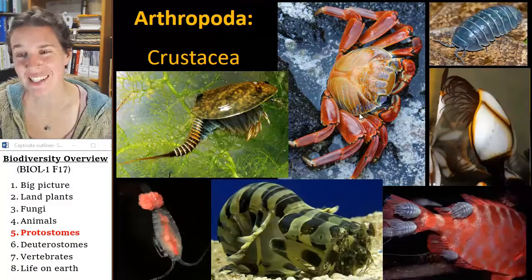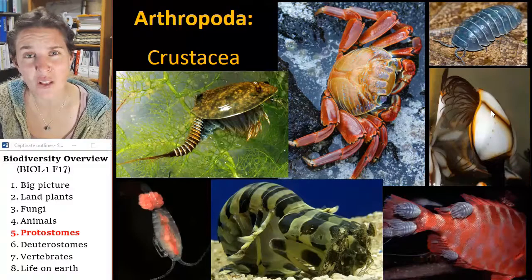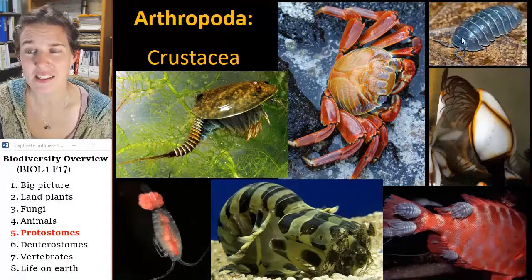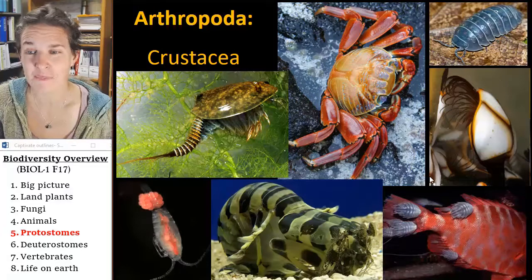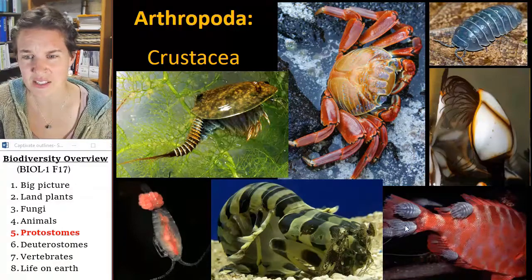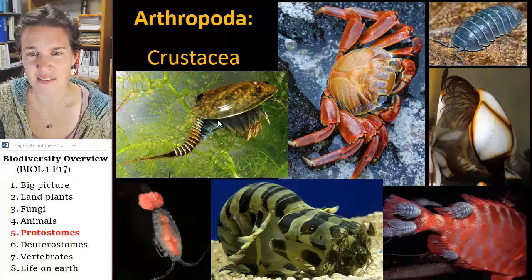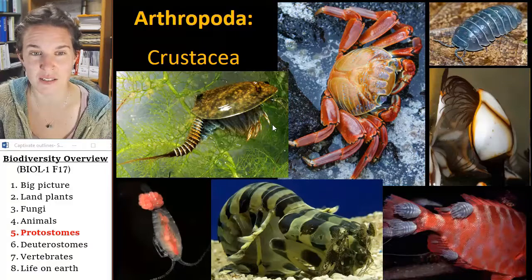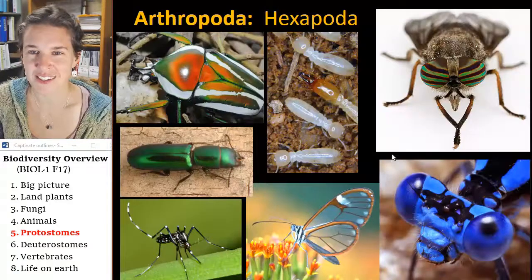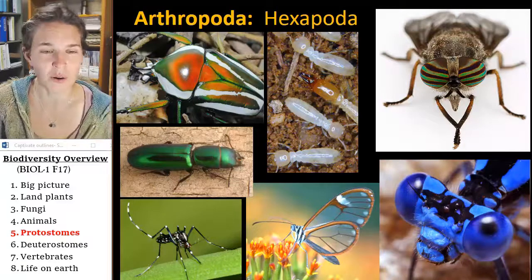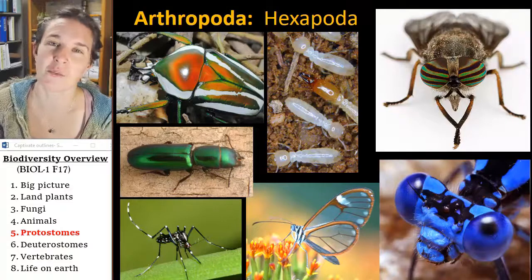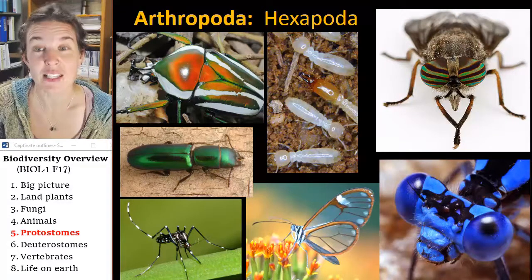Crustaceans — barnacles, these are all arthropods. The sow bug, pill bug, or roly-poly — that thing is the only land crustacean. There are tons of parasitic crustaceans too. And then of course you have all of your insects, and insect diversity will blow your mind. Let's look at the deuterostomes next. We know that deuterostomes have a blastopore that became the anus, and that's how they are classified as deuterostomes.